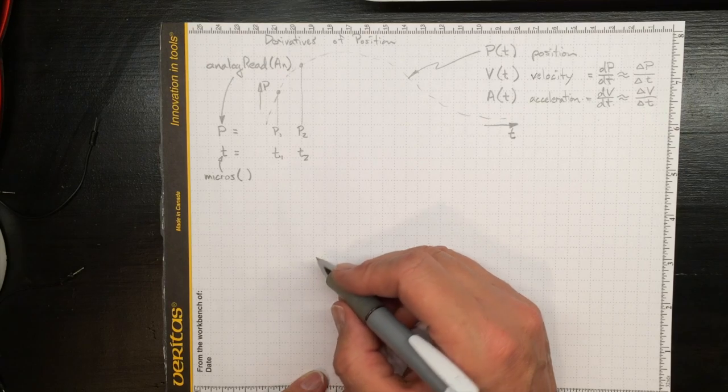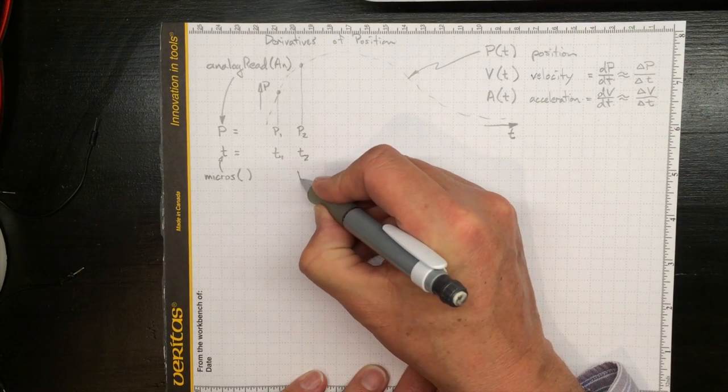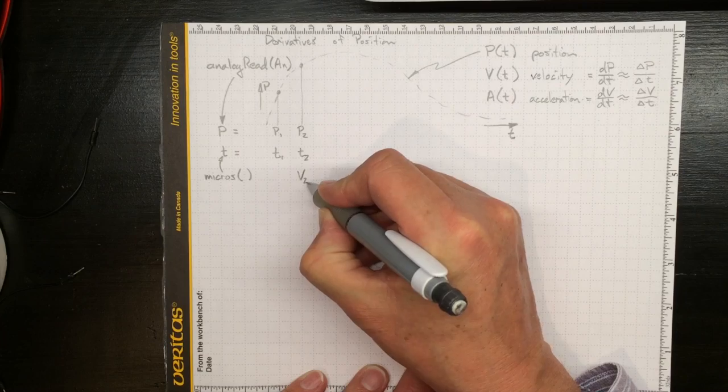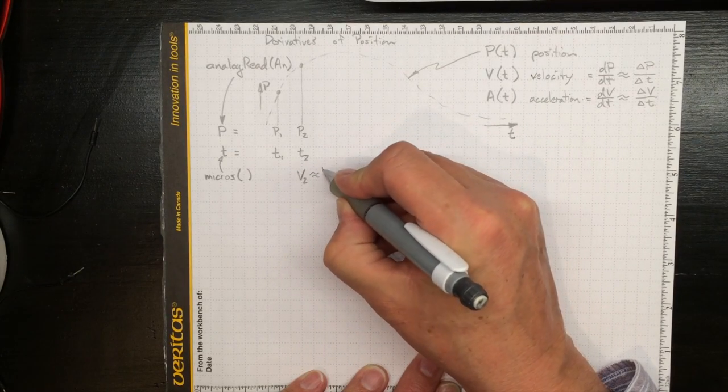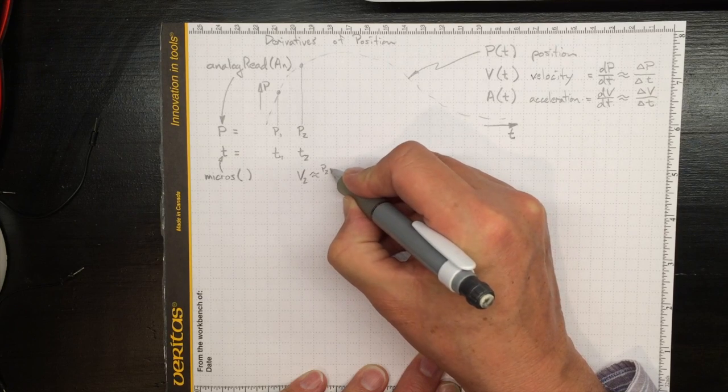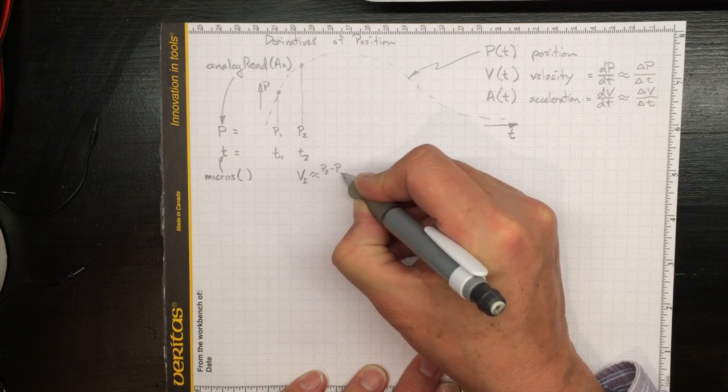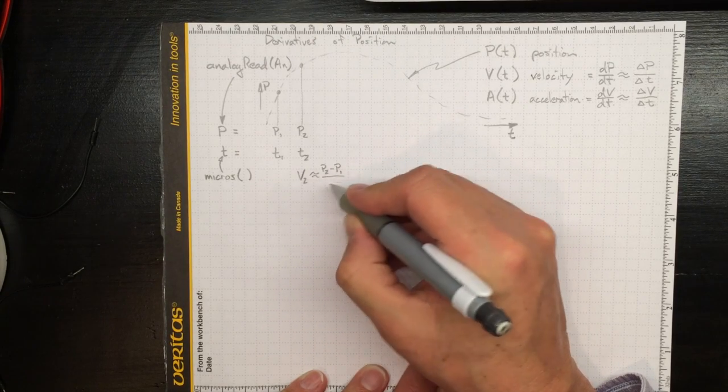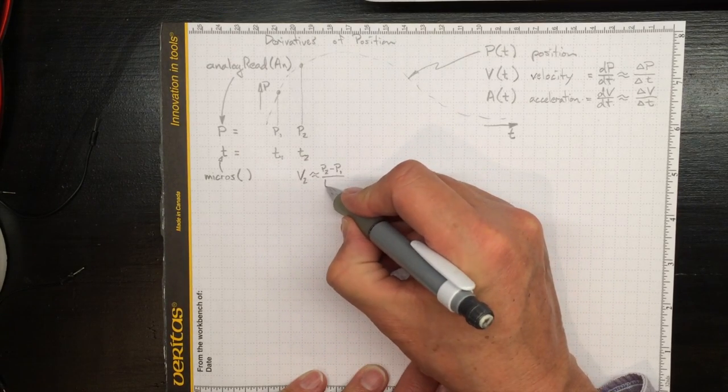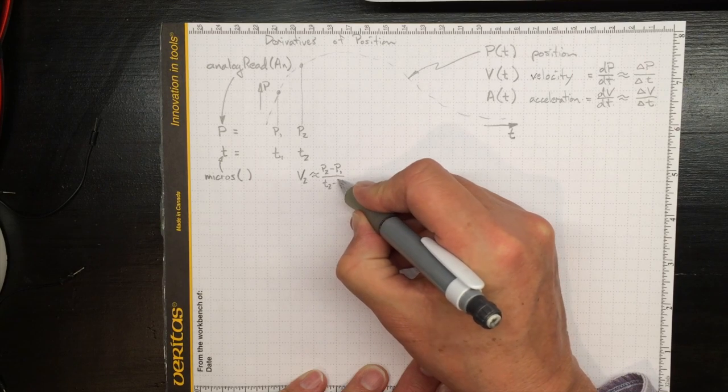Now we can make an estimate of what the velocity is. The velocity at time two is approximately equal to what the position is now at time two minus what the position was before at time one, divided by the difference in time, t2 minus t1.